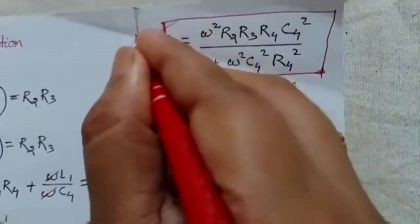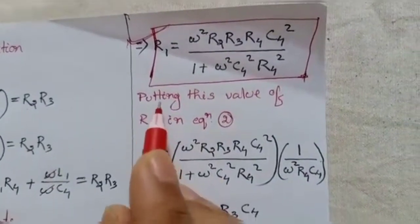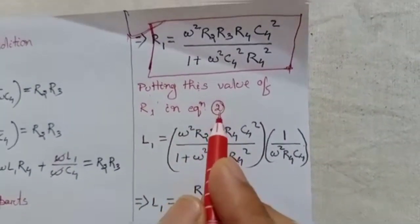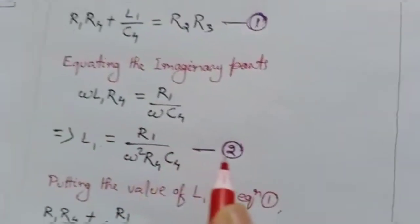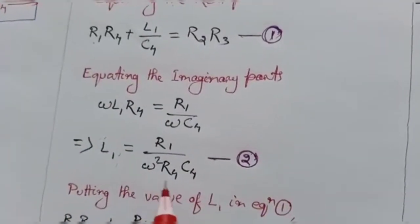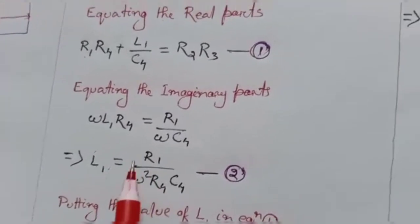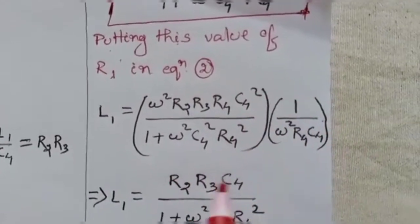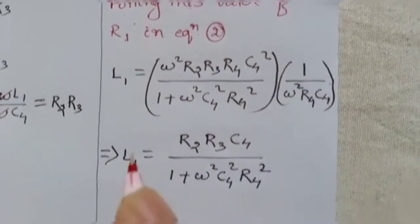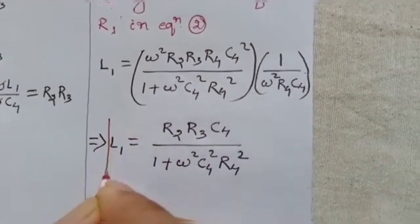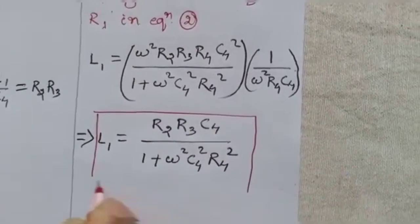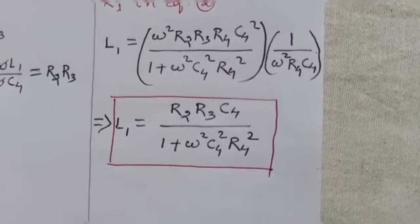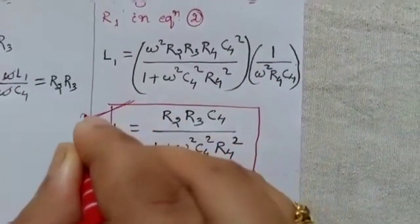This is the value of unknown resistance R1. Then, putting this value of R1 into equation number two — which states L1 = R1 / (ω²·R4·C4) — we get the value of L1: L1 = R2·R3·C4 / (1 + ω²·C4²·R4²). So these are the two unknown parameters L1 and R1 of the Hayes bridge.